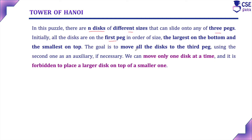The goal is to move all the disks to the third peg using the second one as the auxiliary. To solve this puzzle, we need to follow two conditions. The first condition is: at a time, only one disk should be moved. The second condition is: it is restricted to place a larger disk on a smaller one.